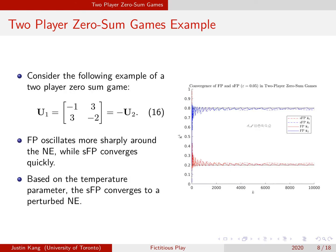This is a simulation of a two-player zero-sum game with a single symmetric mixed Nash equilibrium, where the first value is 0.2 and the second is 0.8. In this case, both FP and SFP converge, just as predicted by theory. SFP seems to converge more quickly, while FP oscillates more sharply. An important thing to note is that SFP is converging to a perturbed Nash equilibrium — using a fixed temperature parameter Gibbs entropy perturbation causes the best response functions to intersect at a point slightly different from the true Nash equilibrium.